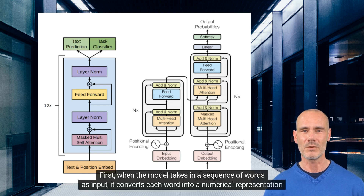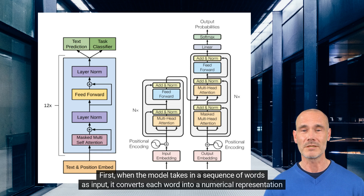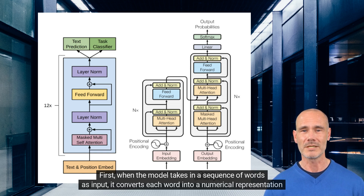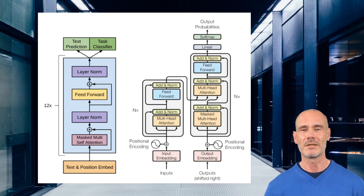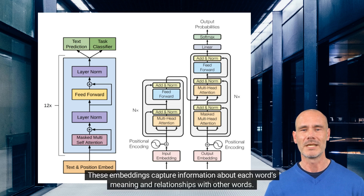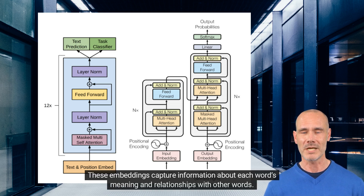First, when the model takes in a sequence of words as input, it converts each word into a numerical representation called an embedding. These embeddings capture information about each word's meaning and relationships with other words.